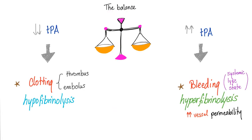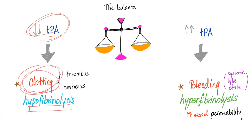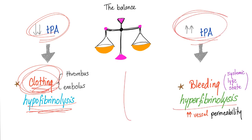Everything in your body is about balance. If you have too little TPA, you don't have fibrinolysis — fibrin will accumulate and you'll have lots of clotting. This is called hypofibrinolysis. Too much TPA leads to hyperfibrinolysis — you lyse fibrin everywhere and bleed. We call this a systemic lytic state. Also, excess TPA will increase vessel permeability.